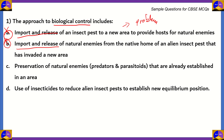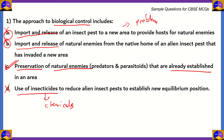In biological control, we use local species to control a situation. Option D, use of insecticides, refers to chemicals, so that's chemical control, not biological control — option D is also incorrect. The correct option is option C: preservation of natural enemies, predators and parasitoids that are already established in an area. For example, if you have mosquitoes in a particular lake, you preserve dragonflies, which are the natural predators, and use them to eradicate mosquitoes.